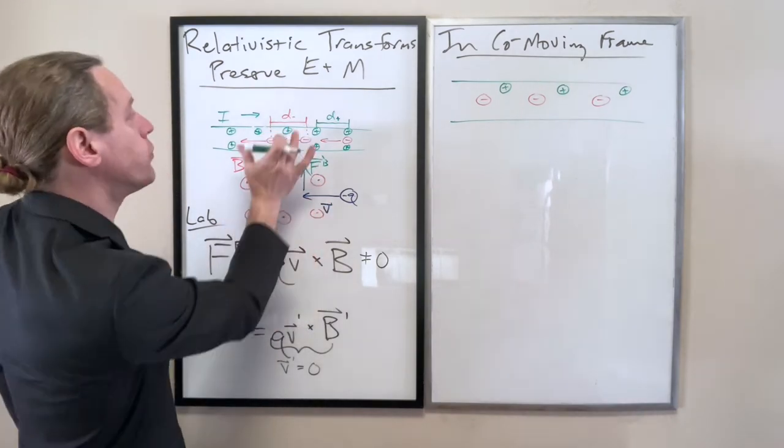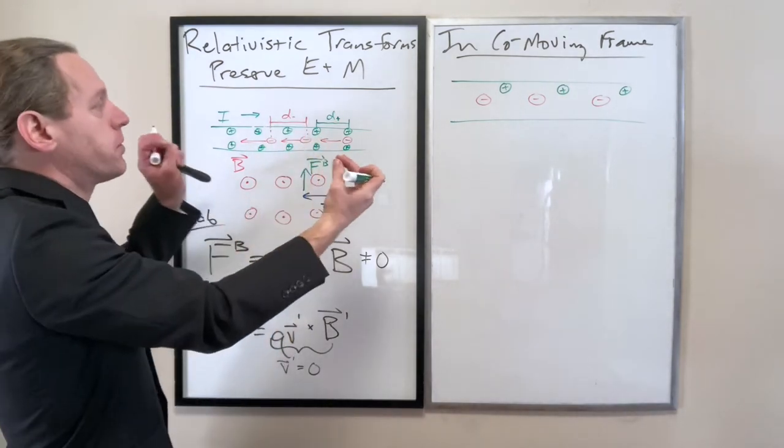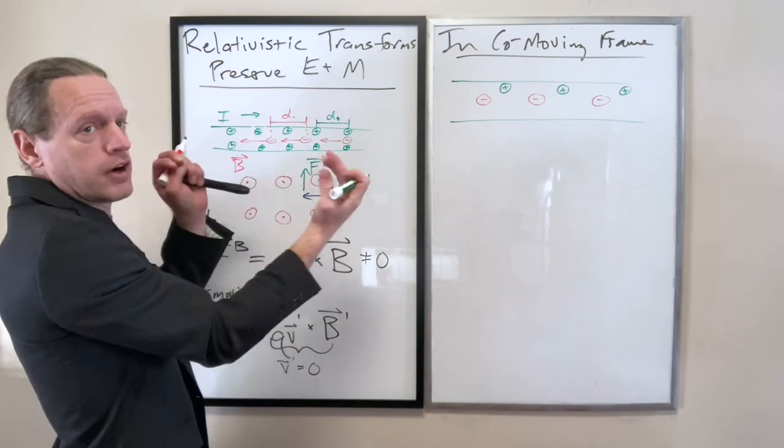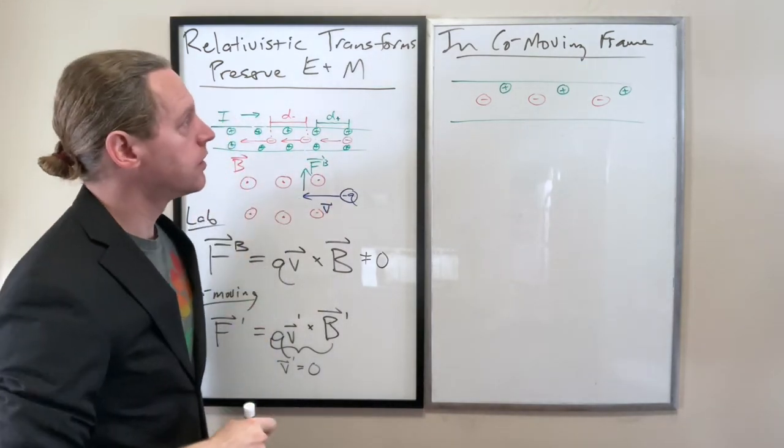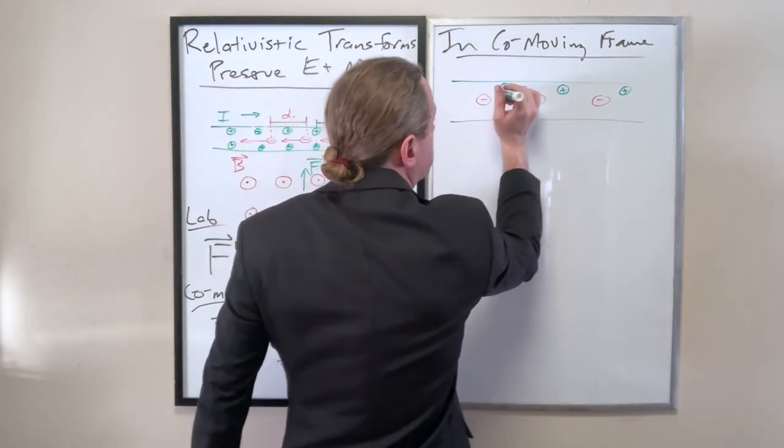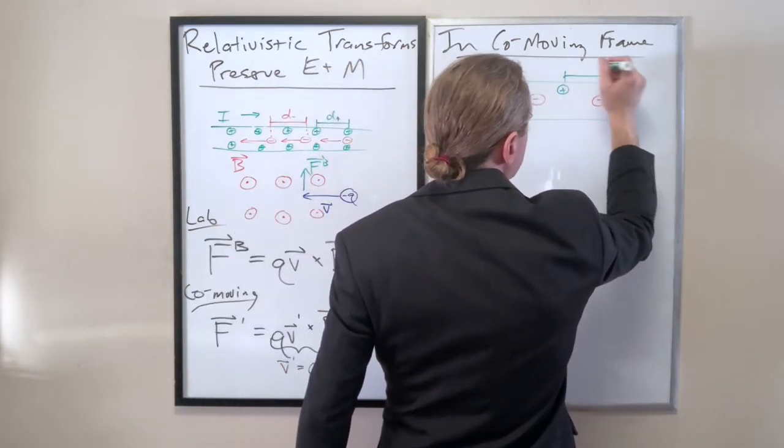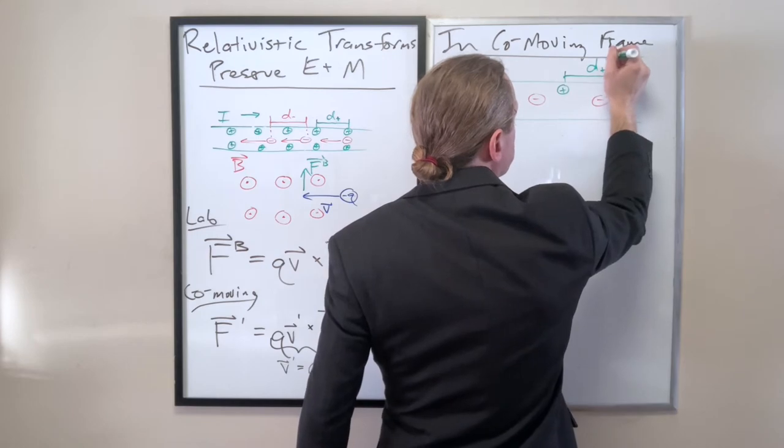And if we calculate the distance between each charge here, this distance d, then I'm going to write d sub e, would be the distance between two electrons in the non-prime frame. And at the same time, we can calculate or estimate what d sub p is, the distance between protons or positive particles. I suppose I could just use d negative and d positive.